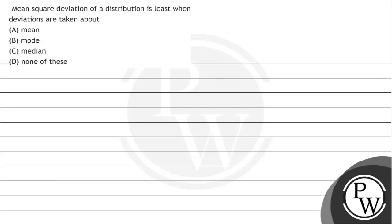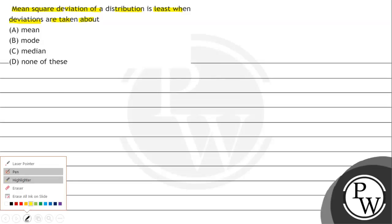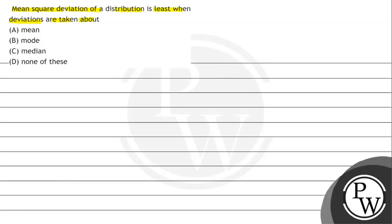Hello, let's read the question. The question says that mean square deviation of a distribution is least when the deviations are taken about — options A, B, C, D are given.